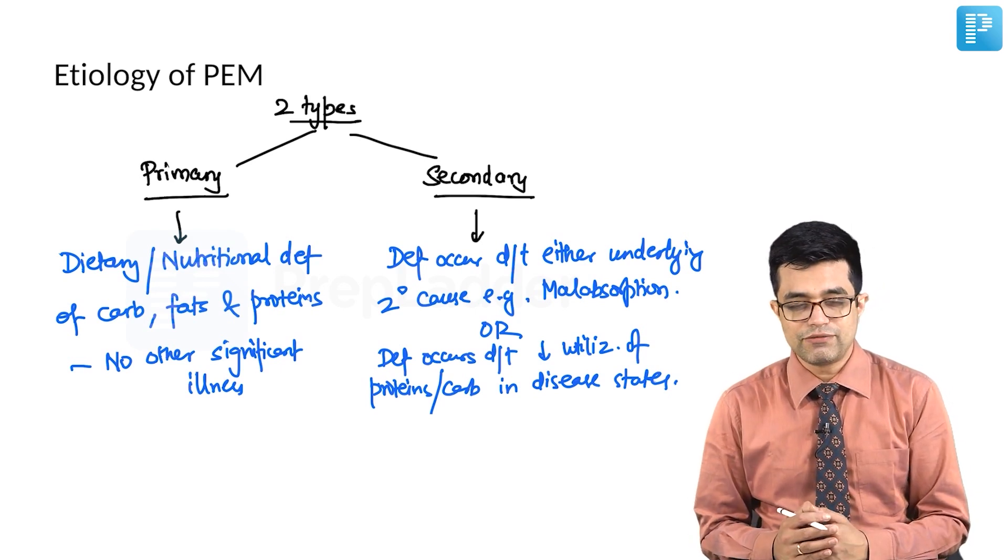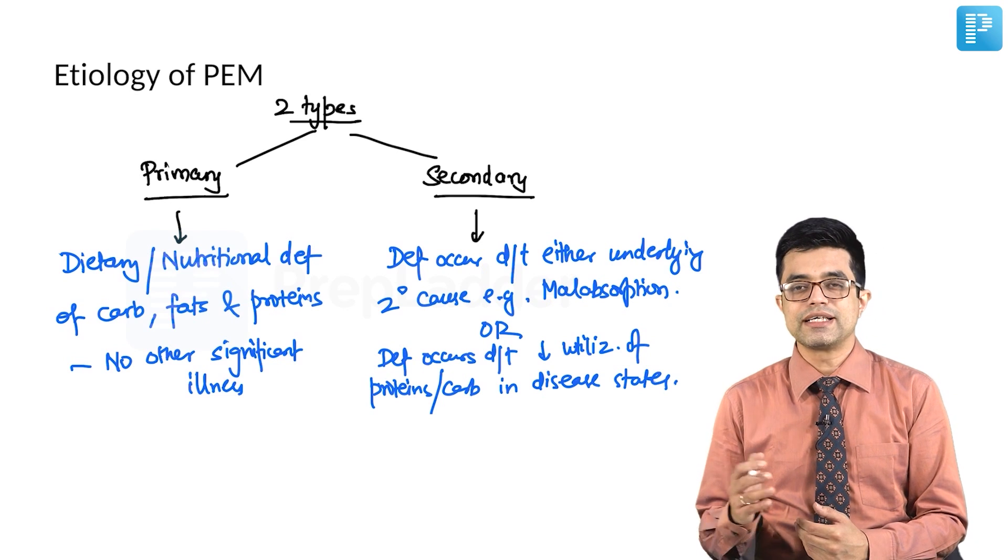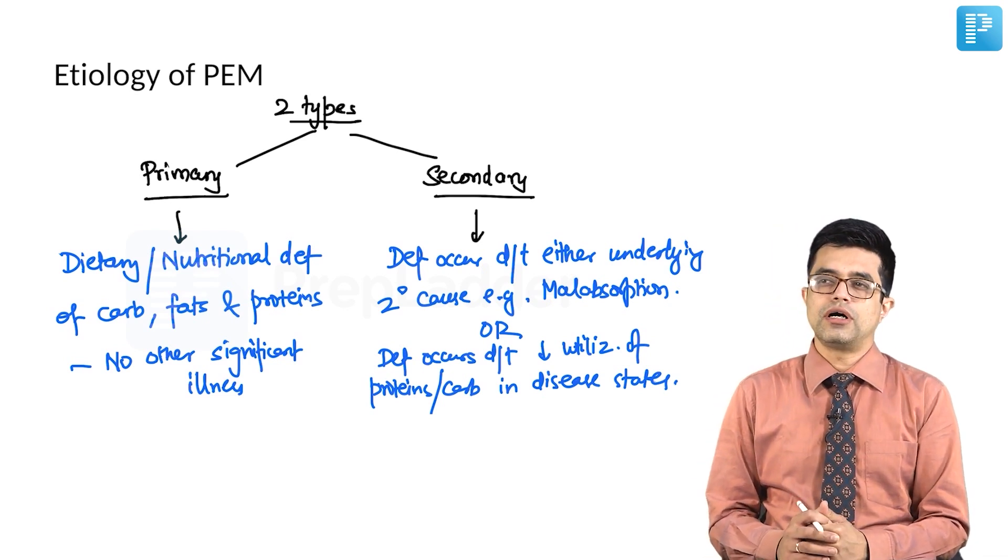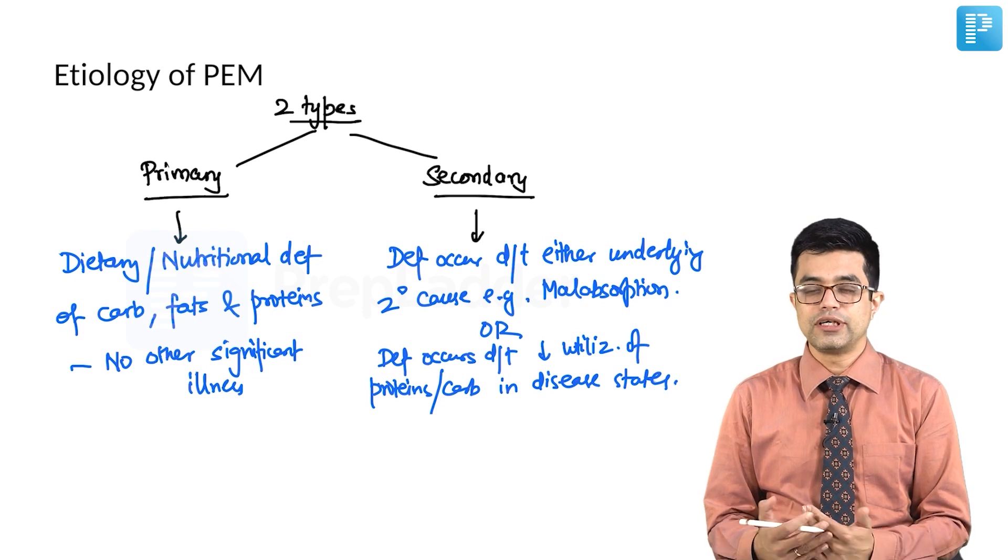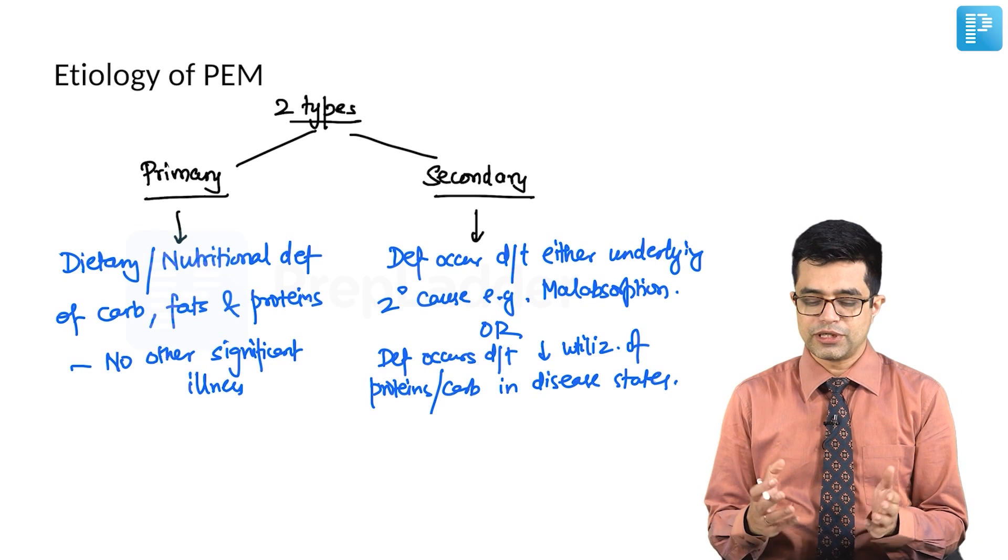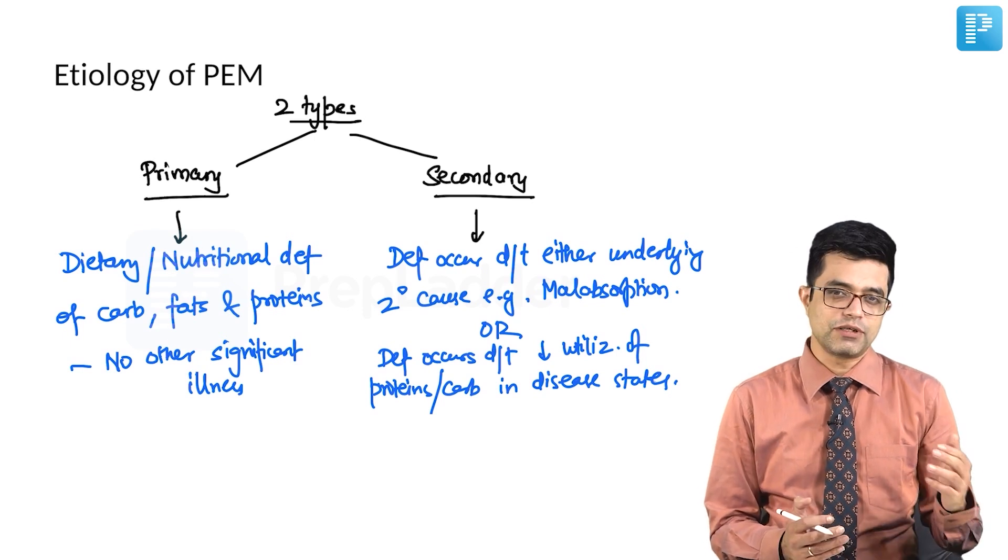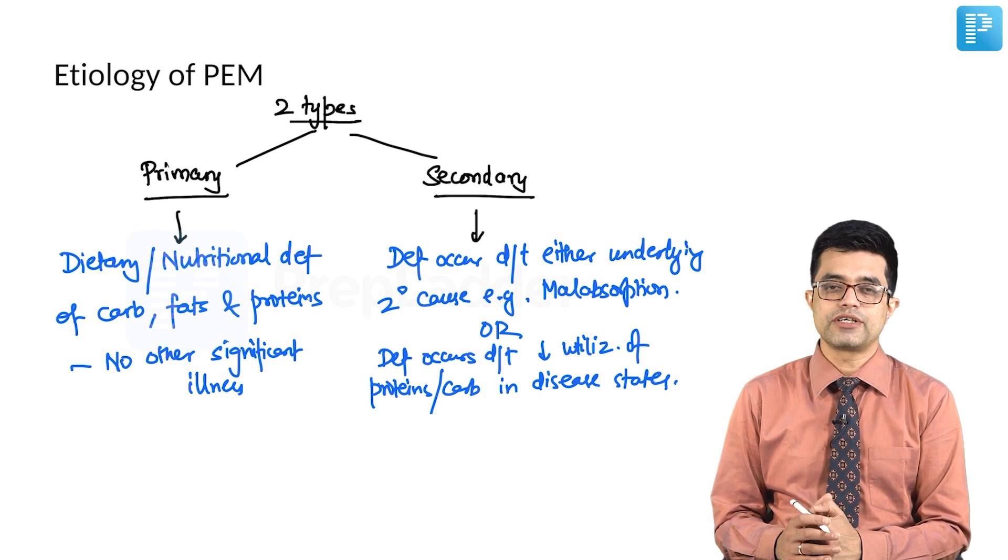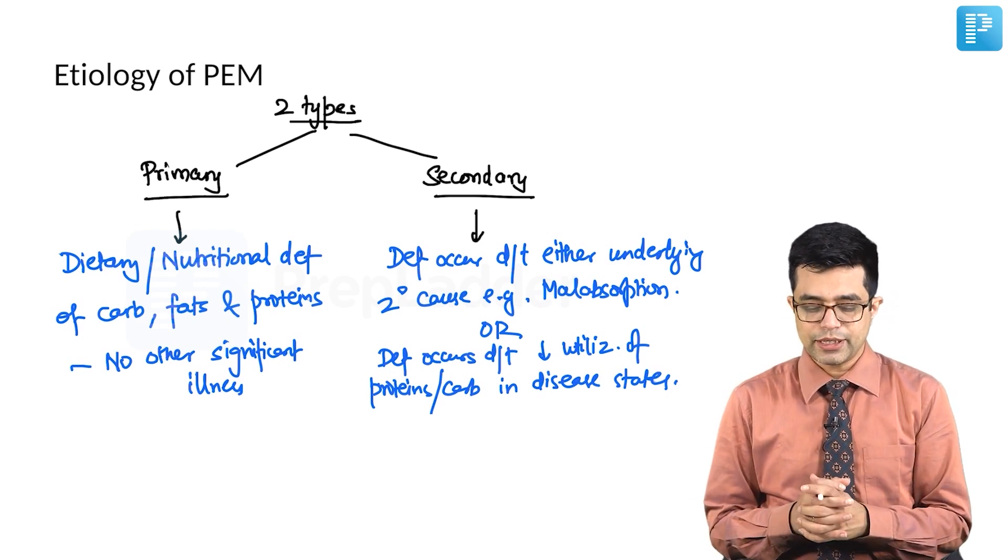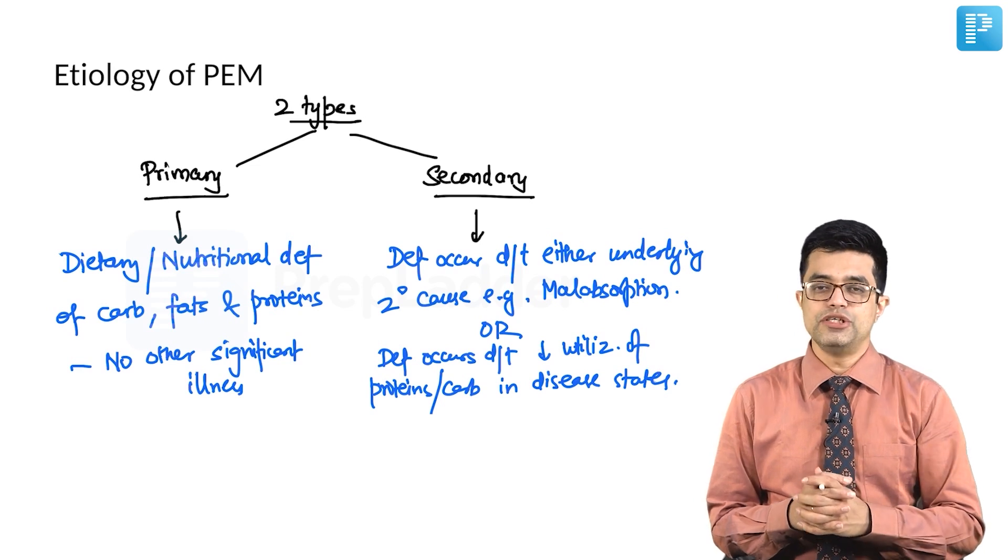In a normal setting, what we normally find is that both primary and secondary forms are very difficult to distinguish each other. Many of the new textbooks, latest textbooks including OP Ghai and Nelson do not talk much about this classification. However, some of the textbooks like IAP and textbook of pediatrics by Dr. Suraj Gupta do talk about it because that has been the traditional way PEM has been defined initially.